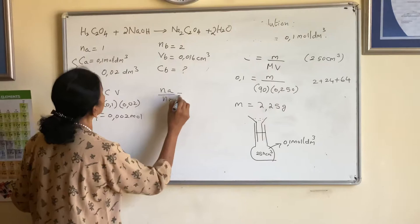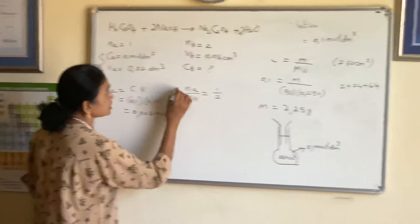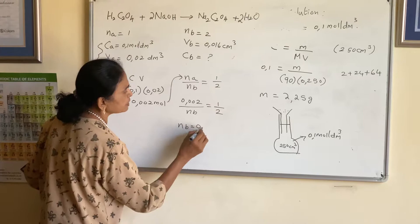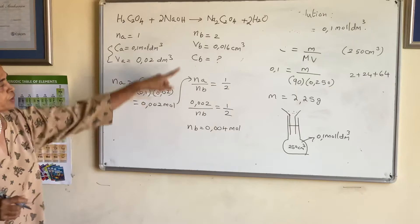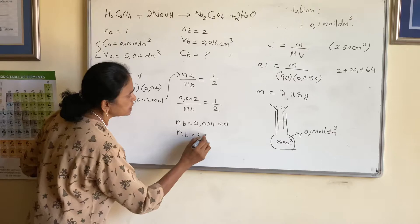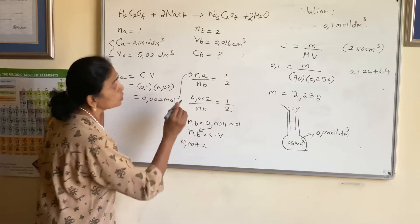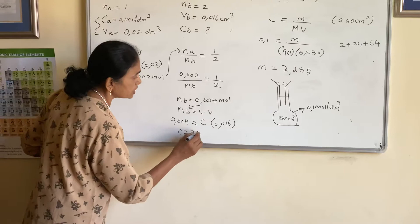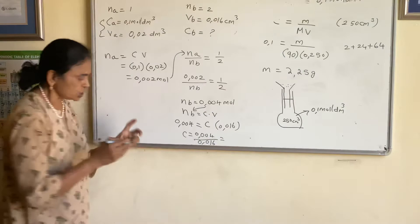Use the mole ratio: acid is 1 and base is 2. So number of moles of base equals 0.002 divided by 1 multiplied by 2, giving 0.004 moles. Now to find concentration: n_b = C × V, so 0.004 = C × 0.016. Therefore C equals 0.004 divided by 0.016.